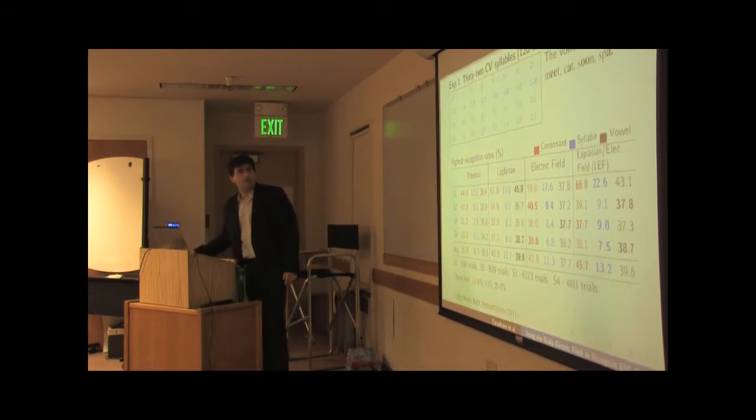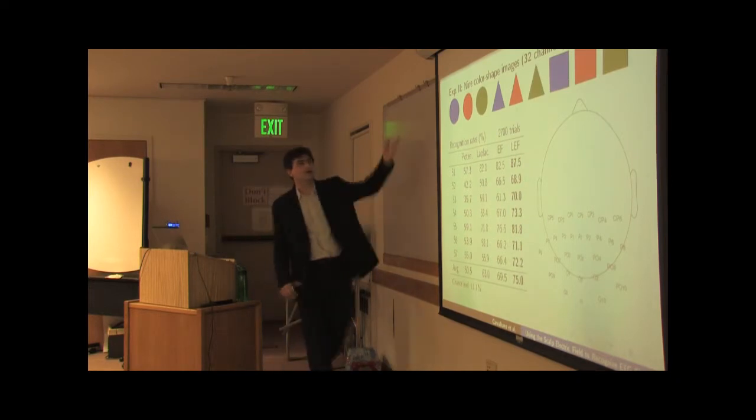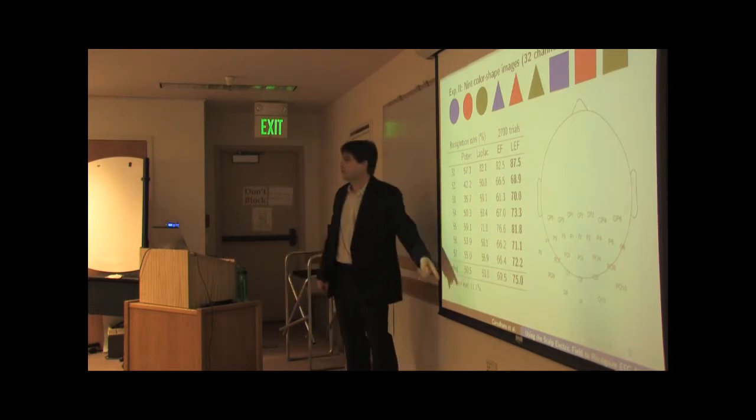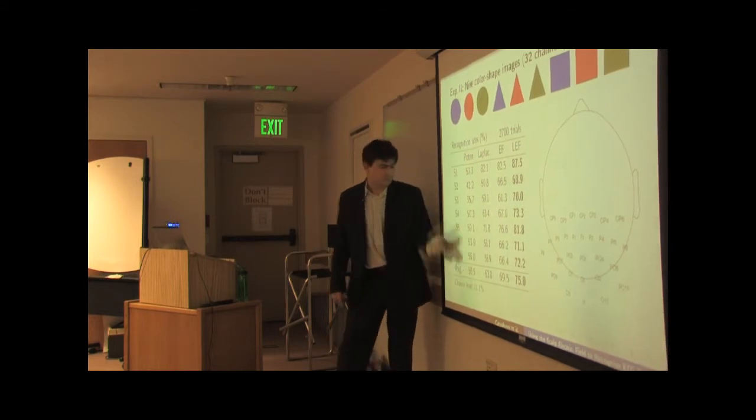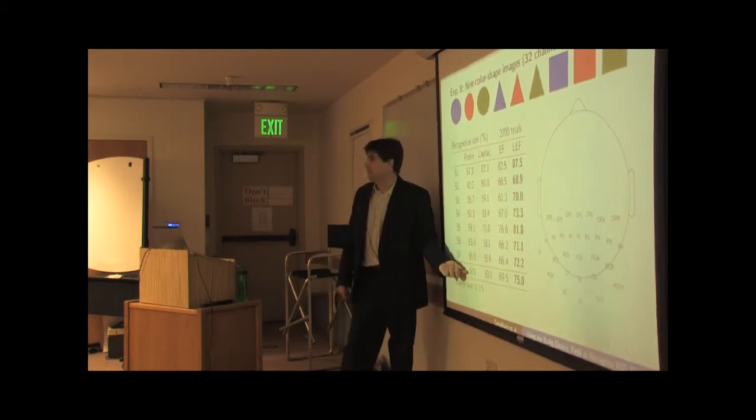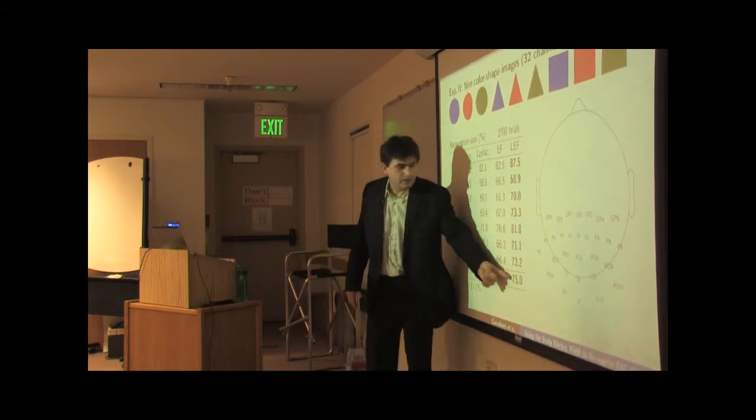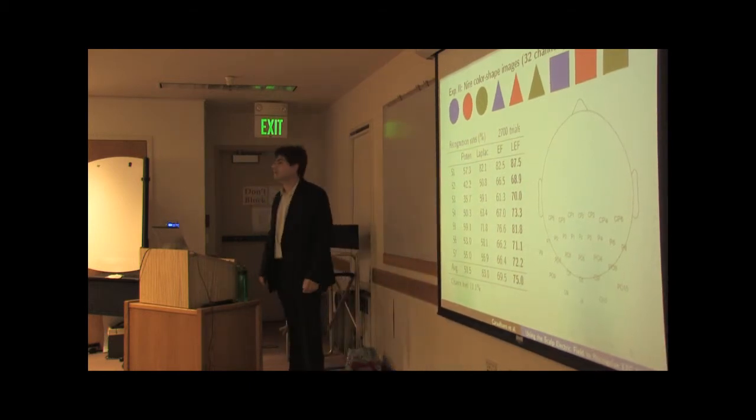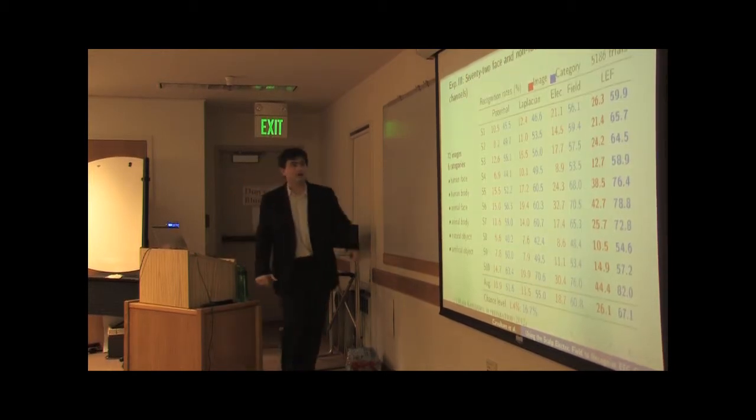And I have results for four different experiments. The next one involves nine color-shaped images. So chance level is 11%. But when I classify the signal using the potential on average for seven subjects, I get about 50%, which is far from chance. But if I process it with the electric field, the result is 75%. It's much better.